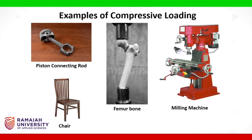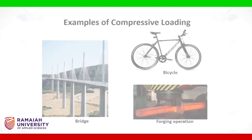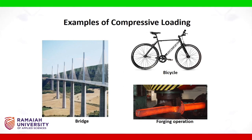Piston and connecting rod of internal combustion engine, legs of a chair, femur bone, bed of a milling machine, piers of a bridge, and bicycle frame experience compressive loads. In manufacturing processes like forging, compressive load is employed to convert raw material into a product of desired shape and size. In such conditions, knowledge of material behaviour under compressive load is essential to a design engineer.